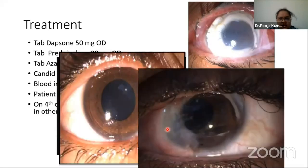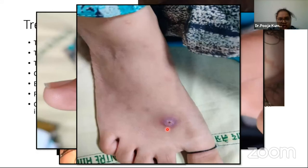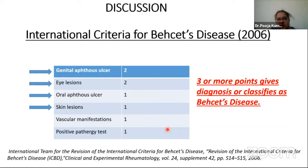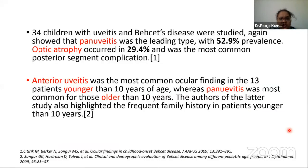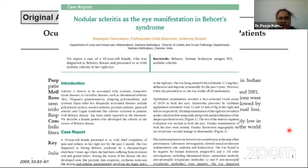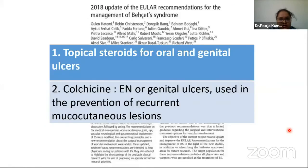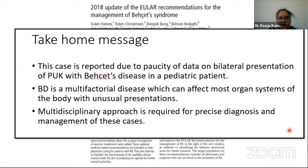After starting topical steroids, the lesion in the left eye cleared, and the systemic lesions also began disappearing. Our diagnosis was based on the International Criteria for Behçet's Disease. Our score was six out of eight, which is diagnostic — the criteria require three or more points. In the review literature, in pediatric patients pan-uveitis and anterior uveitis are more common, but our patient presented with peripheral ulcerative keratitis (PUK). The take-home message is that this case adds to the data on bilateral presentation of PUK with Behçet's disease in a pediatric patient. Behçet's is a multifactorial disease affecting most organ systems with unusual presentations, and a multidisciplinary approach is required for precise diagnosis and management. Thank you.